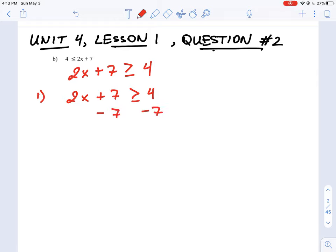So we have plus 7 minus 7. And whatever we do to one side we have to do to the other. So we're going to have 4 and then minus 7. So if I work that out, I have 2x is greater than 4 minus 7, which is going to give us negative 3.